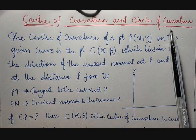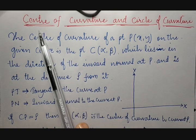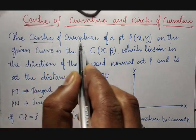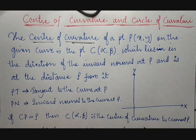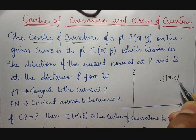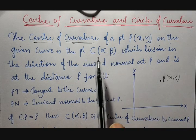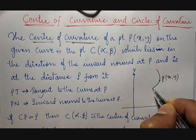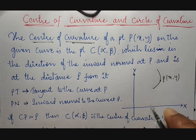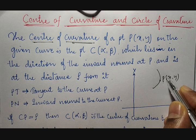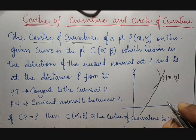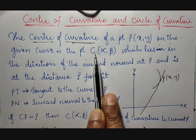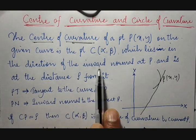We have already discussed radius of curvature. Now in continuation with that, we are going to discuss center of curvature and circle of curvature. The center of curvature of a point P(x, y) in Cartesian format lies on the given curve at a point C(α, β). If we take this as a curve and P be any point, then we draw a tangent to this curve. The point C(α, β) lies in the direction of the inward normal at point P.